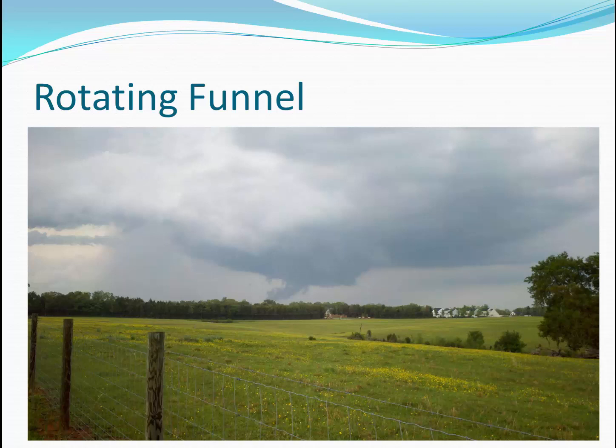Notice behind this cloud, we can also see the rain shaft or an area of strong rain showers. Again, this may not have been technically considered a tornado because there was no evidence of any damage on the ground. For a tornado to occur, the condensation funnel and extreme winds have to come in contact with the ground.